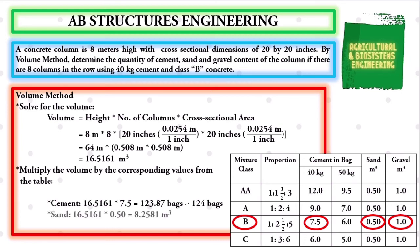Next, the quantity of the sand. We have the volume of 16.5161 times 0.50, giving us an answer of 8.2581 cubic meters.